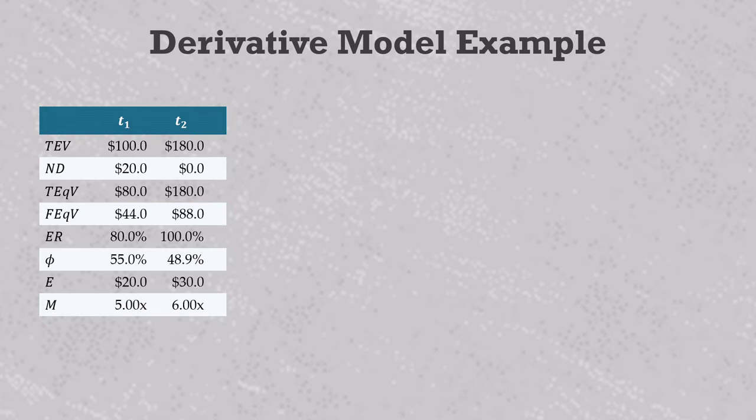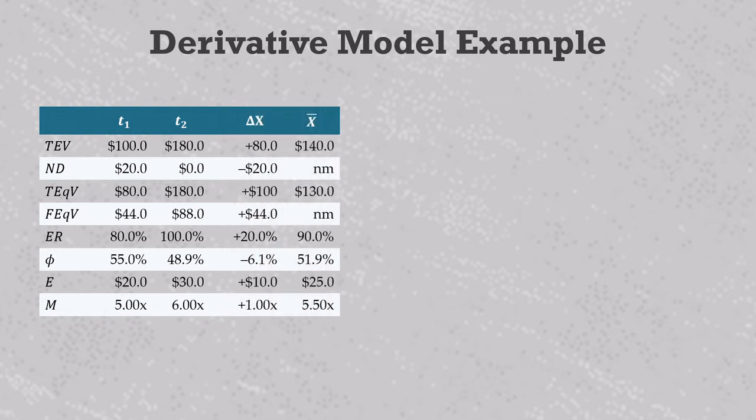And the company's EBITDA grows from 20 to 30 over the hold. These numbers give us the T1 and T2 equity ratio, phi, and valuation multiples that you see in the table. The next step is to calculate all the deltas and averages, because that's what drives the derivative model of value creation. We show these values here.